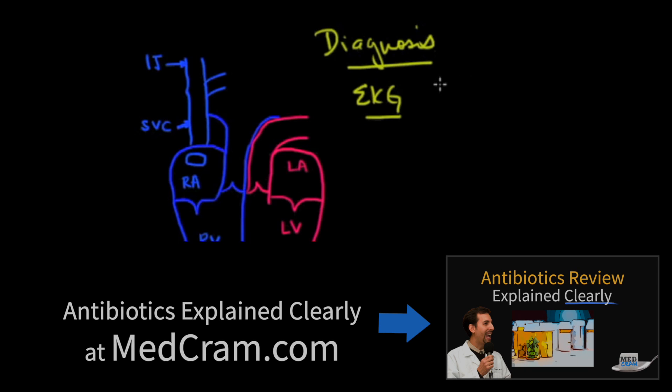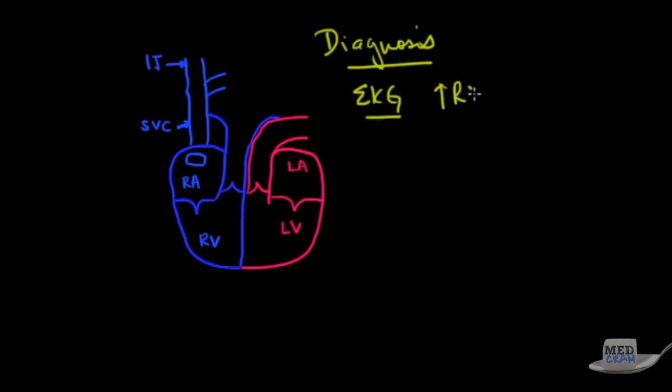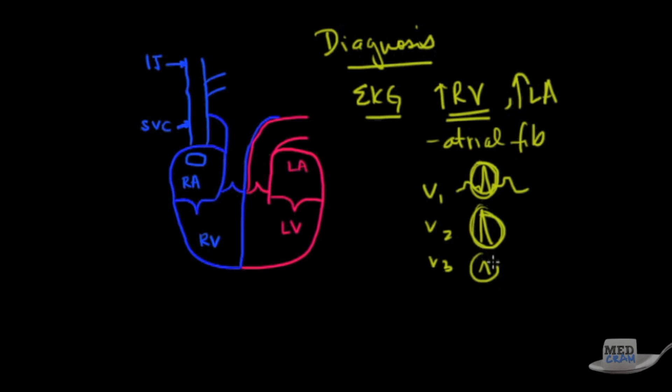On EKG you'll see enlargement of the RV and left atrium, and you might see atrial fibrillation. With RV enlargement, if you look at the precordial leads like V1, V2, V3, you're going to see that the QRS complexes are going to be large. Think about right ventricular hypertrophy - the QRS complexes are going to be large in the precordial leads.